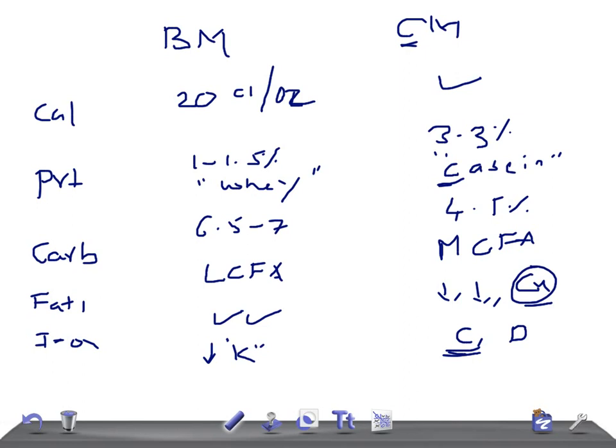Then we have renal solute load. It's low in breast milk and high in cow's milk. Renal solute load is not important for USMLE.